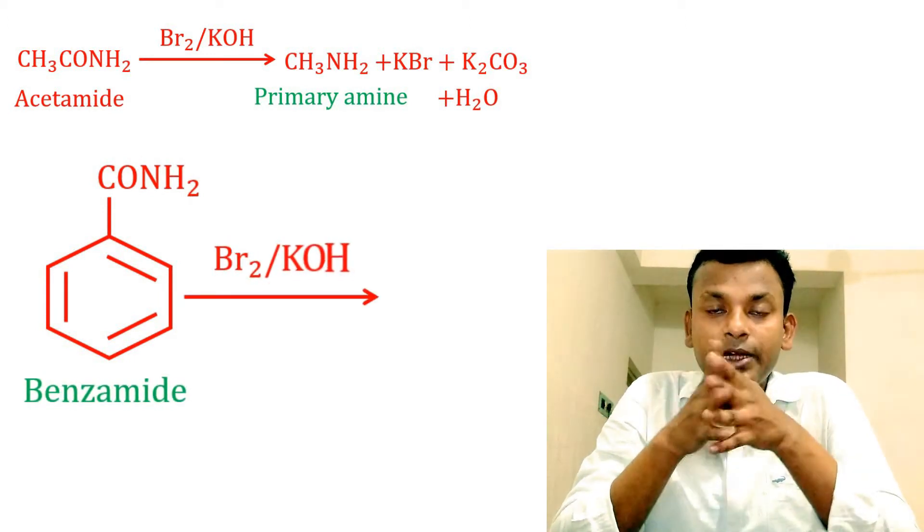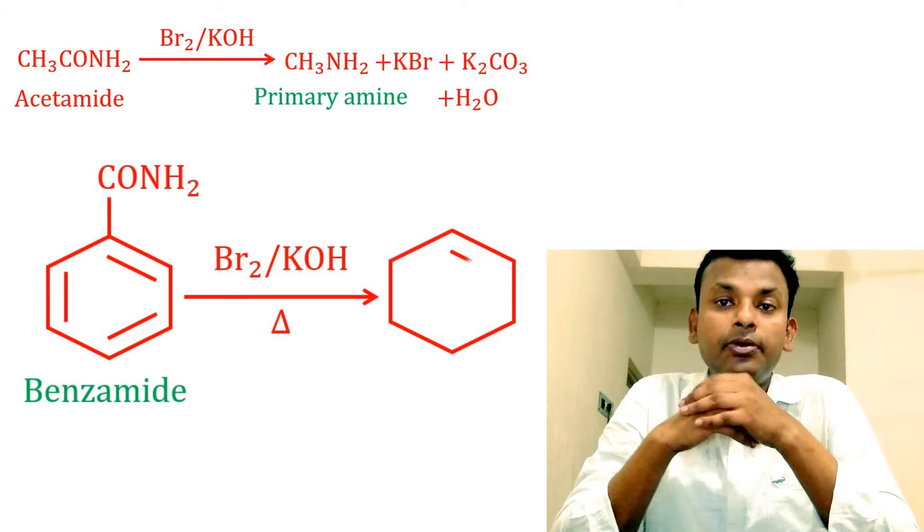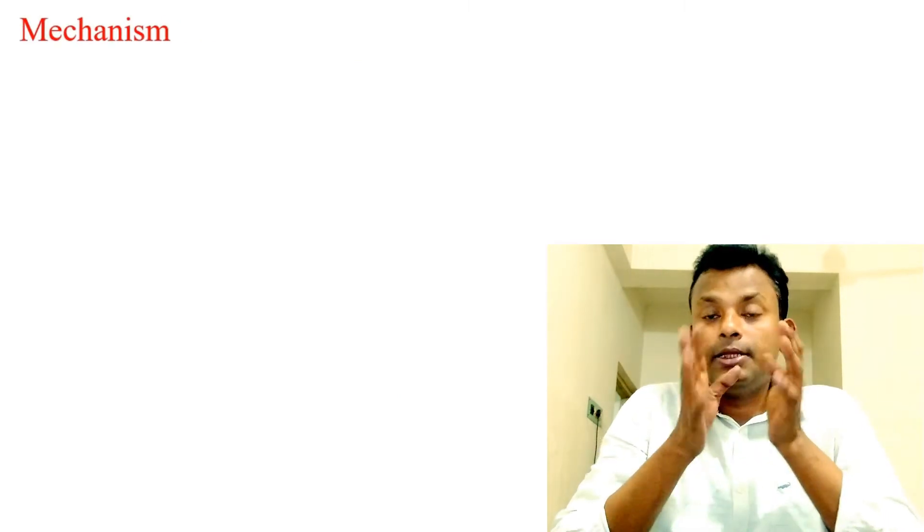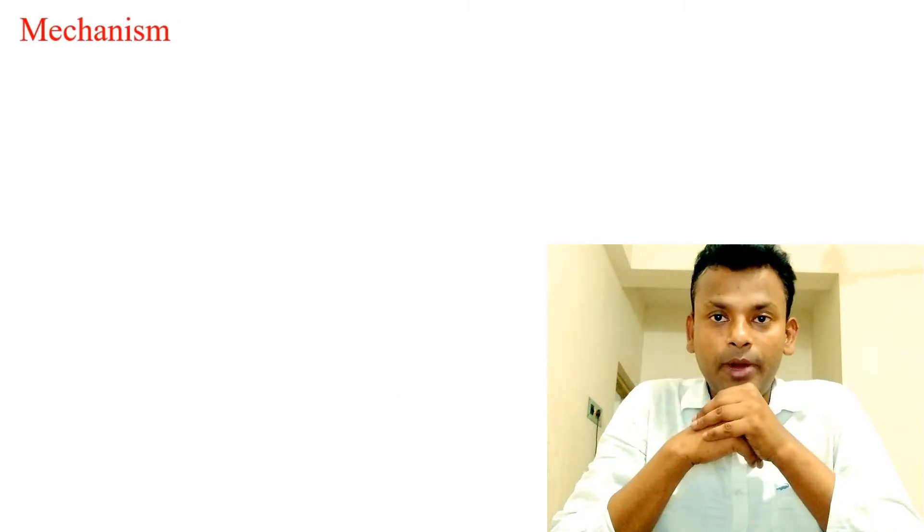C6H5CONH2, that is benzamide, reacts with Br2 and KOH gives C6H5NH2, that is aniline. Now discuss the reaction of Hofmann bromide reaction with mechanism.